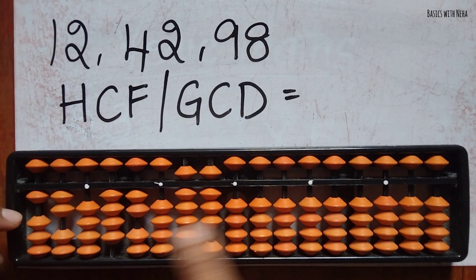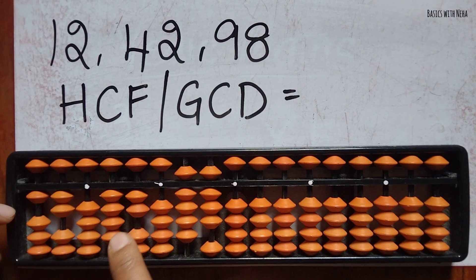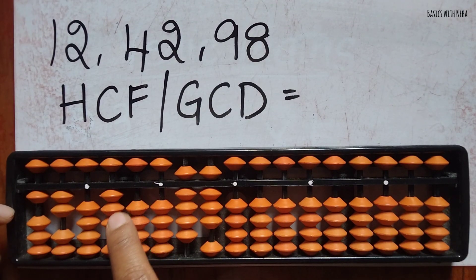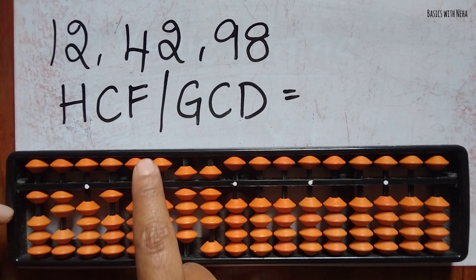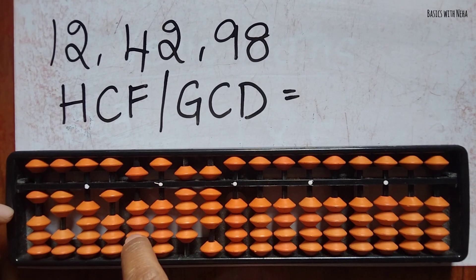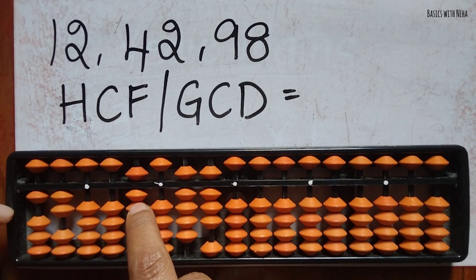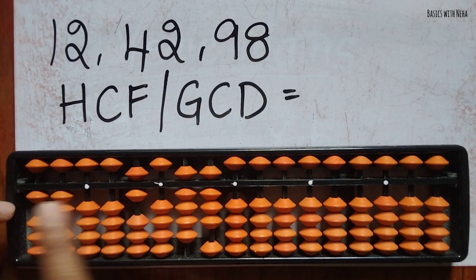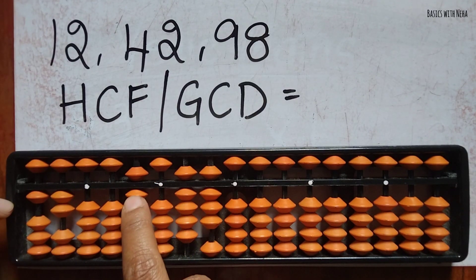The smallest number is 12, so subtract 12 from 42. 42 minus 12 is 30, which is still larger. 30 minus 12 is 18, again minus 12 gives 6. Now from these three numbers you have to take the smallest number — 6 is the smallest number.